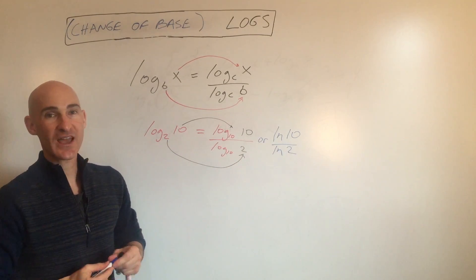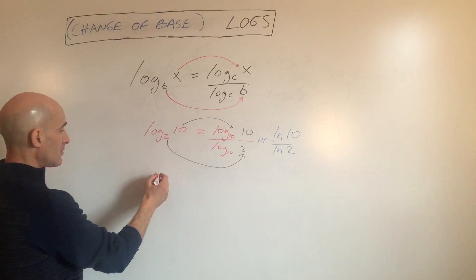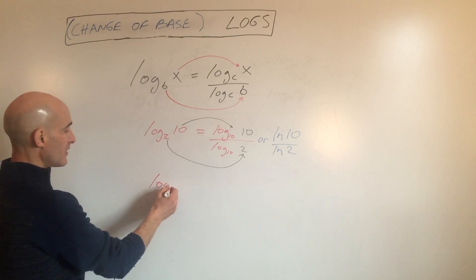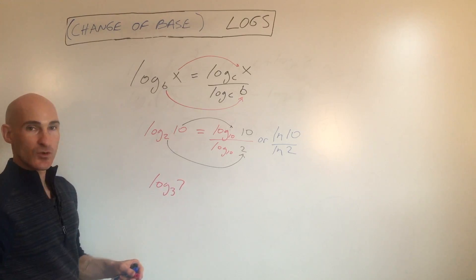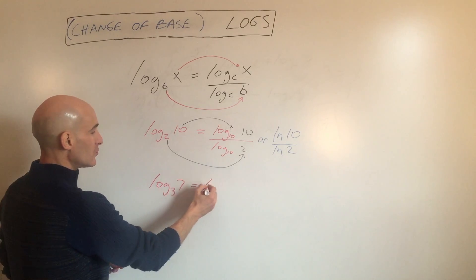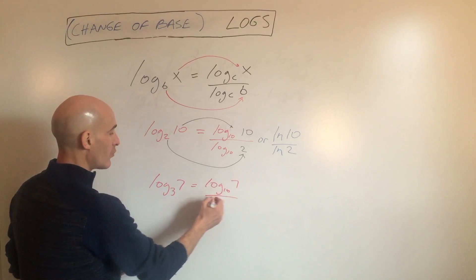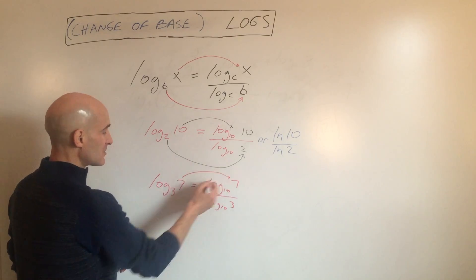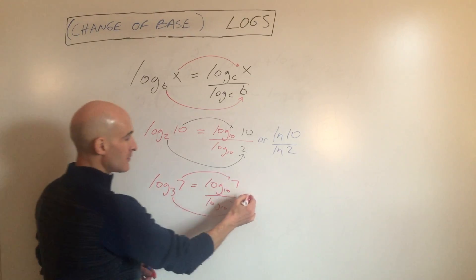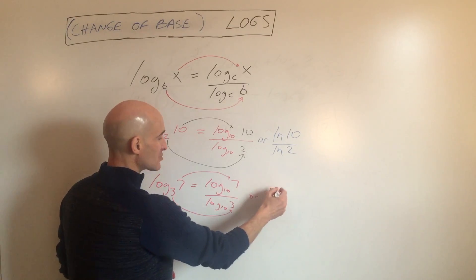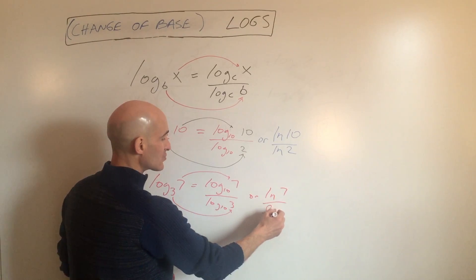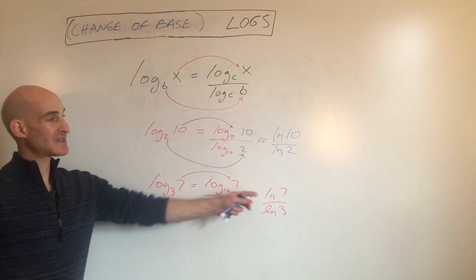I'll show you one more example. Let's say you had log base 3 of 7. What do we do? We do log base 10 of 7 over log base 10 of 3. The 7 goes in the numerator, the 3 goes in the denominator. Or natural log of 7 over natural log of 3. Exact same answer.